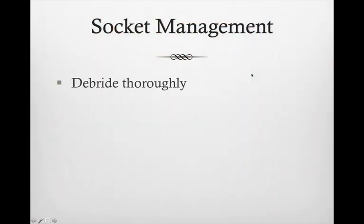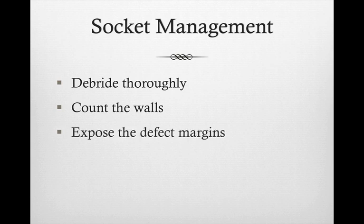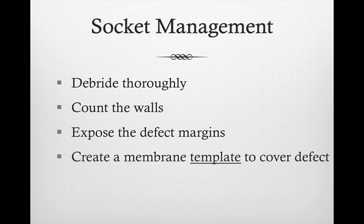When you look at the socket, first debride very, very well — don't leave anything behind. Use saline irrigation to flush it out. Count the number of walls and make sure you're aware which walls are there and which ones are not. That will help you manage the bone grafting. Expose the defect all the way to its margin; you want to see good, healthy bone. That will allow you to place the proper size of membrane.